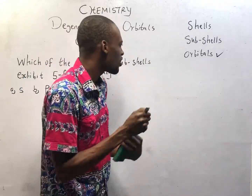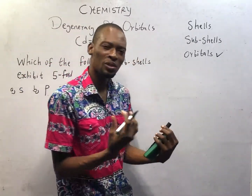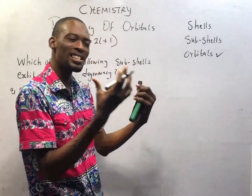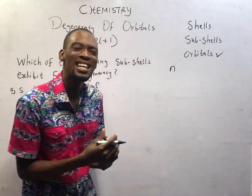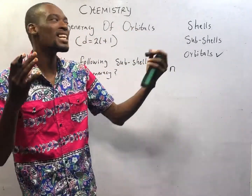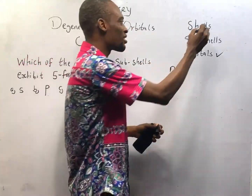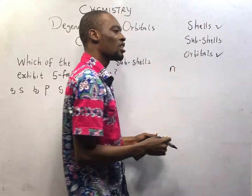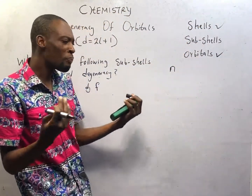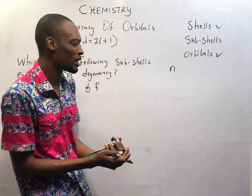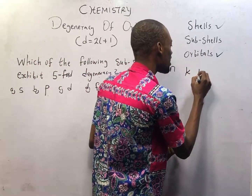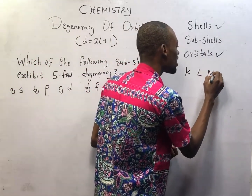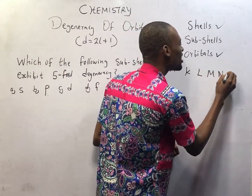Now, the principal quantum number is designated by n and it represents the shells. For principal quantum numbers, we have K, L, M, N, and so on — K shell, L shell, M shell, N shell, and so on.